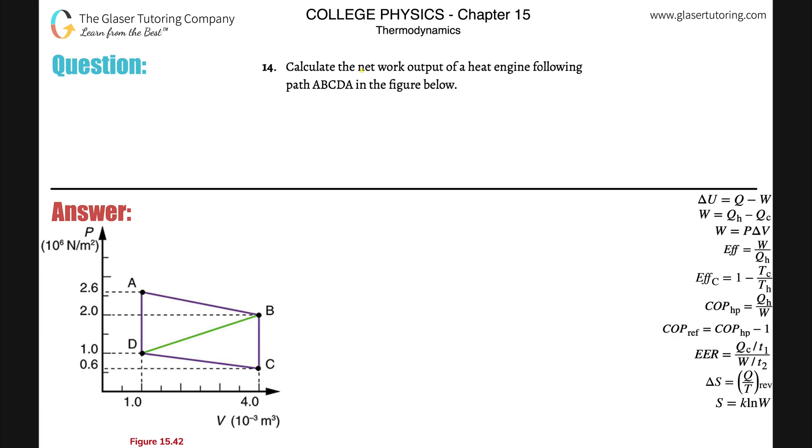Number 14, calculate the network output of a heat engine following the path ABCDA in the figure below. Basically, whenever you have a figure like this and you're plotting pressure versus volume, all you have to do is simply find the total area inside the figure. So the figure here is going to be purple. Our job is to find the area.